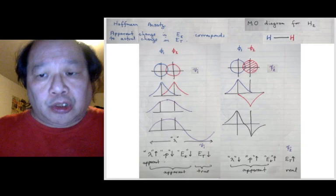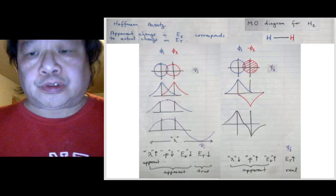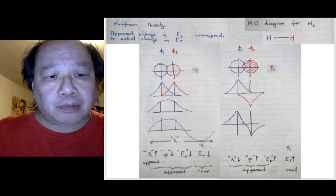So, psi 1 is lower in energy because the blue phi 1 has gotten together with the red phi 2. While psi 2 is higher in energy. And this you can just see without a detailed computer, just using the Hoffman Ansatz.